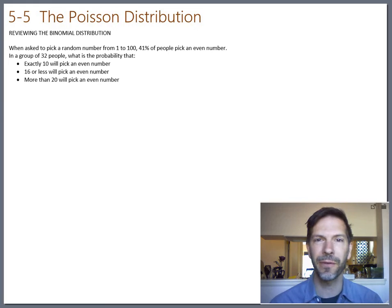From the first day survey, I asked you to pick a random number from 1 to 100. 41% of you picked an even number. Let's use that as our baseline percentage. My next class will probably be just a single class, not a learning community, so it'll probably have a cap of 32. So let's work out these probabilities. In a group of 32 people, what's the probability that exactly 10 will pick an even number, 16 or less, and more than 20?